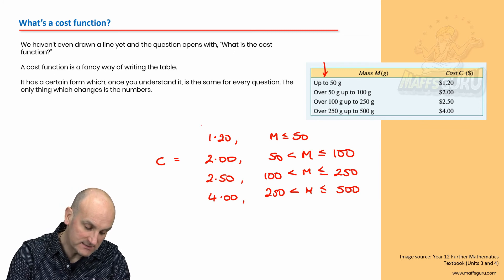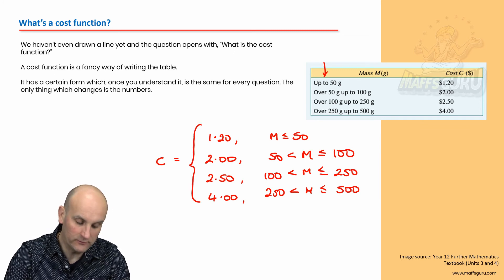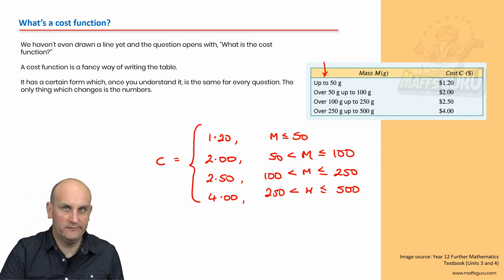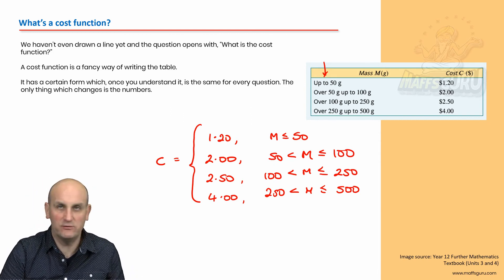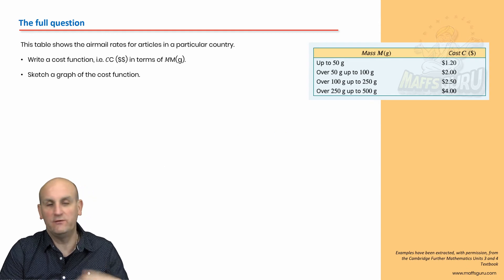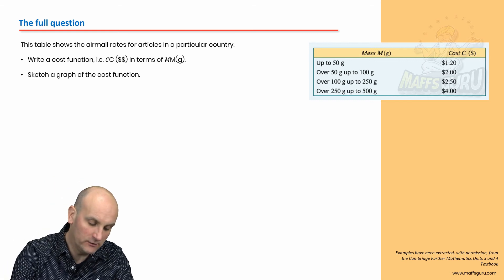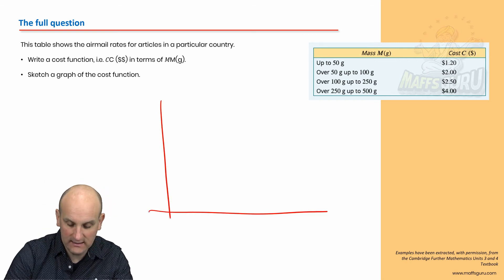Now, do you see why I don't normally draw those first? Because, now it doesn't look particularly good at all. And, now, there's my cost function. So, we haven't even drawn a step graph yet. Suddenly, for some strange reason, they want me to do algebra in this question. So, now, having written the cost function, we can draw or sketch the function.